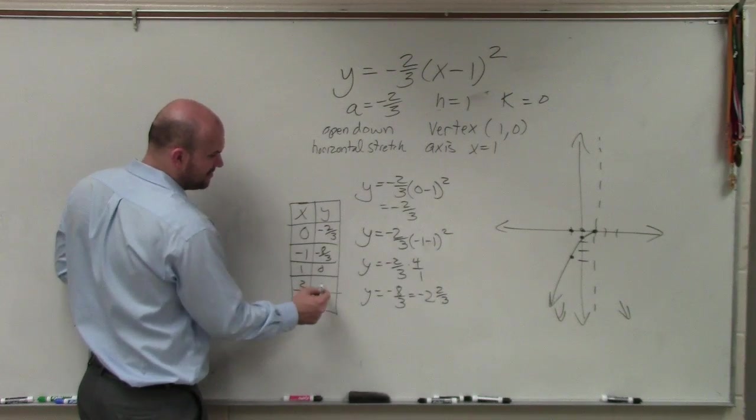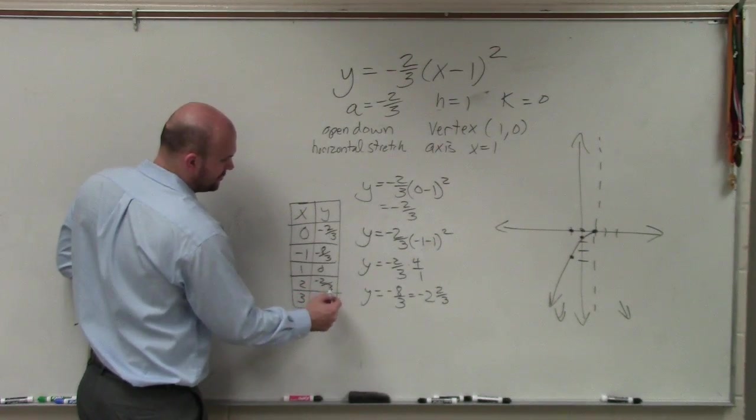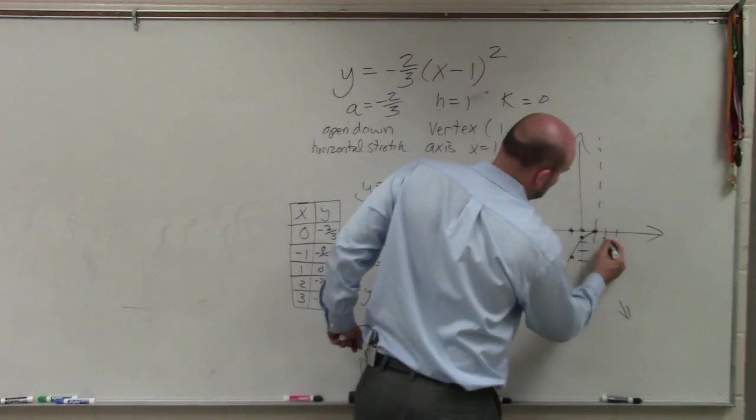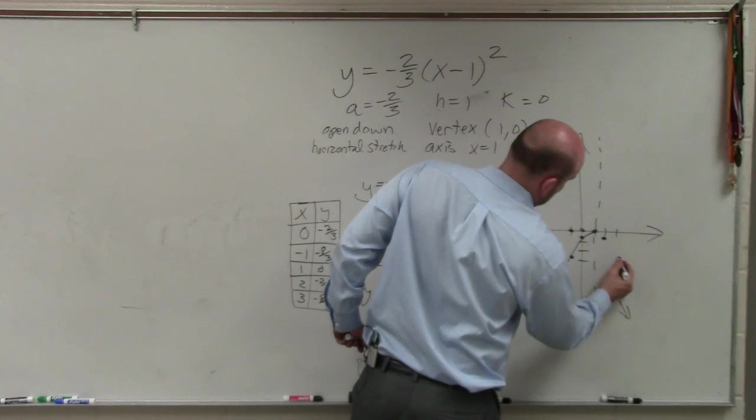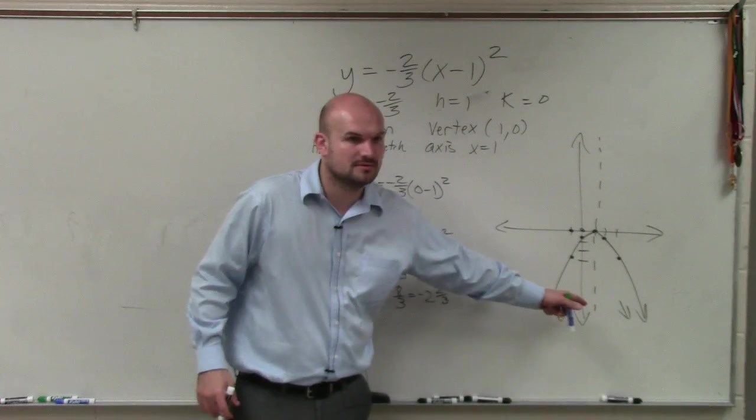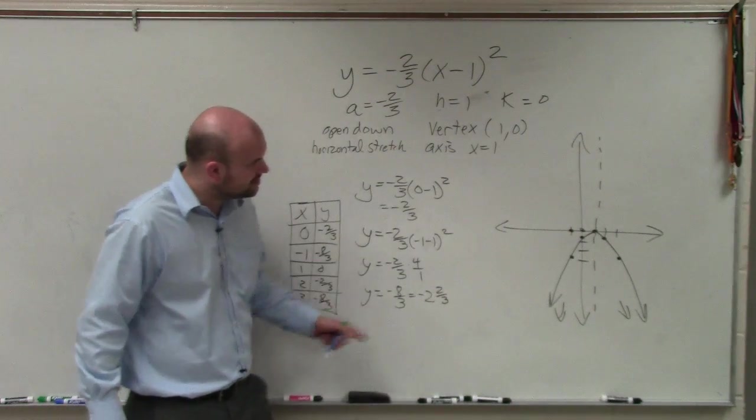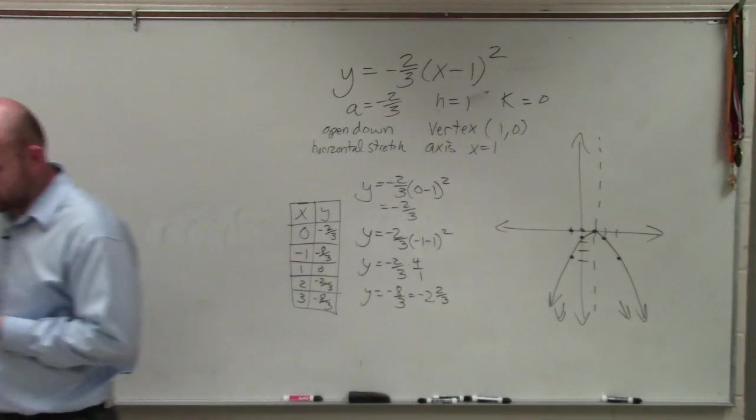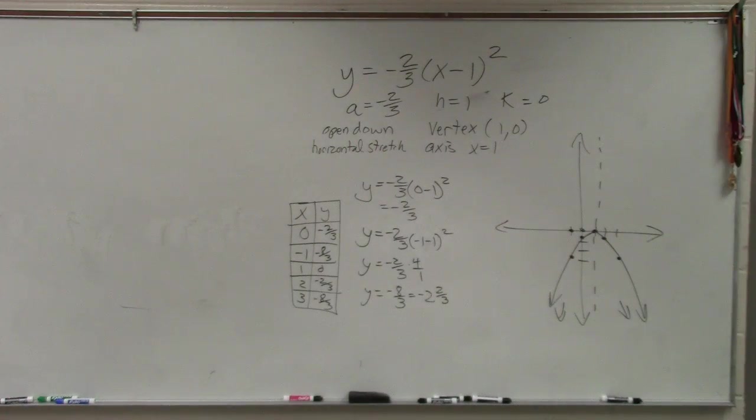Well, and guess what? Their values are going to be exactly the same. -2/3 and -8/3. So I just go and plot those over there, and then there's my graph. It opens down, as well as there's the points, there's the vertex, and you're done. So the best thing, ladies and gentlemen, is when a equals 1, these problems are fairly...